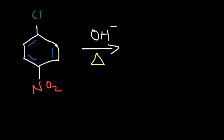This reaction works well in the presence of electron-withdrawing groups, such as the NO2 group. In electrophilic aromatic substitution reactions, electron-withdrawing groups deactivate the ring towards EAS reactions. But electron-withdrawing groups activate the ring in a nucleophilic aromatic substitution reaction. These electron-withdrawing groups work very well if they're placed in the ortho position or in the para position. They're not very effective in the meta position.